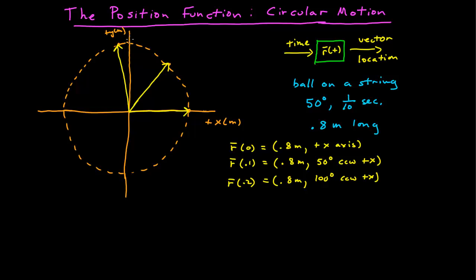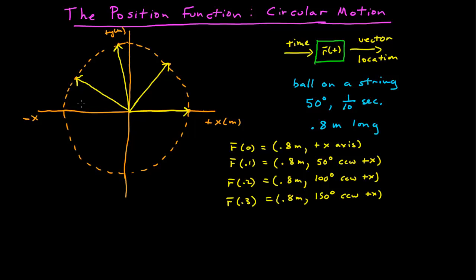Unless you're told specifically where to reference your angle, any reference is correct as long as you identify it and define it clearly. Another tenth of a second later, our particle has moved another 50 degrees. That yellow vector has a magnitude of 0.8 meters, and we can say it's 150 degrees counterclockwise from positive x — or 30 degrees clockwise from negative x.